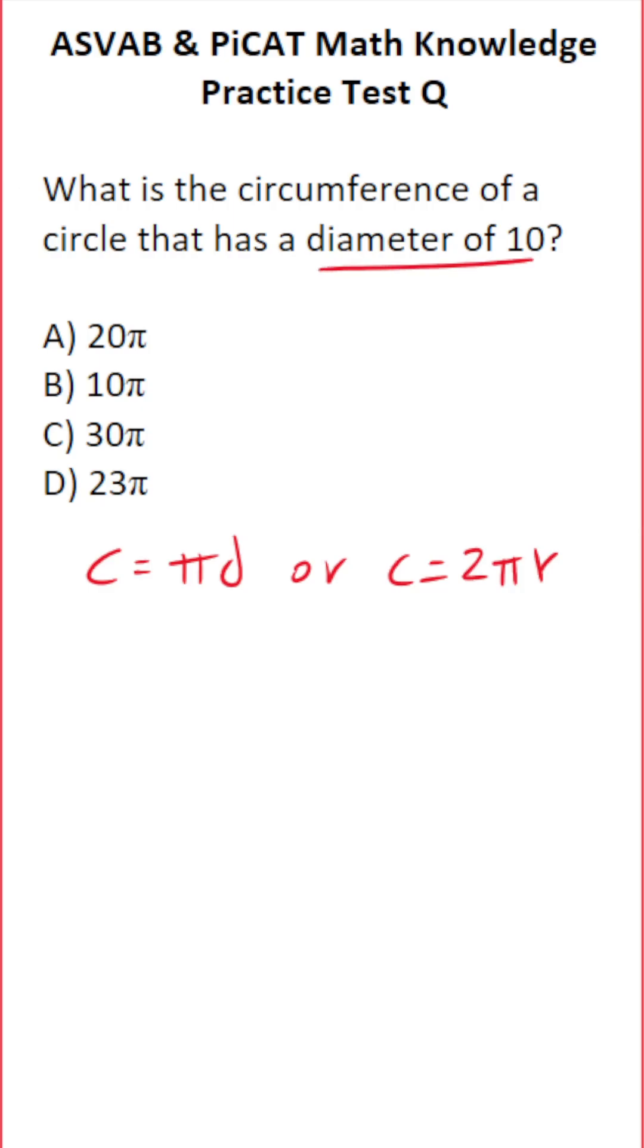In this case, we were only given the diameter of the circle, so we're going to plug in 10 for D. This becomes circumference equals pi times 10, which is the same thing as 10 pi.